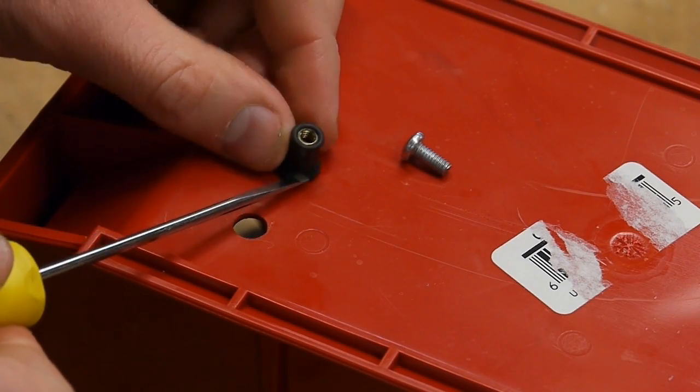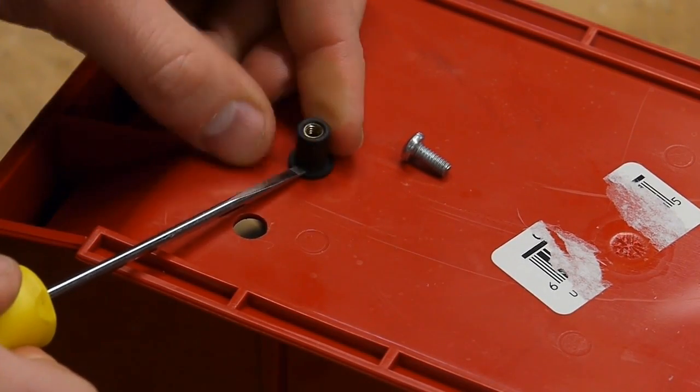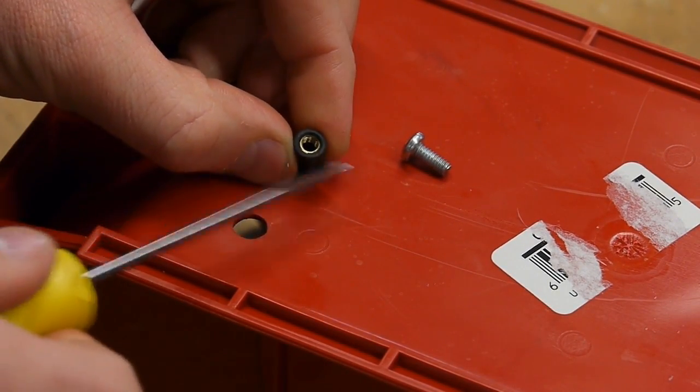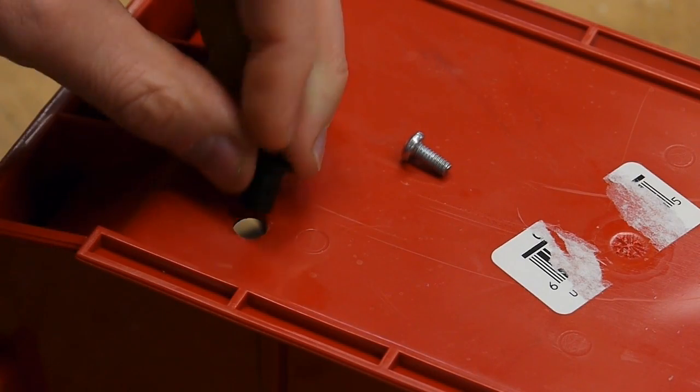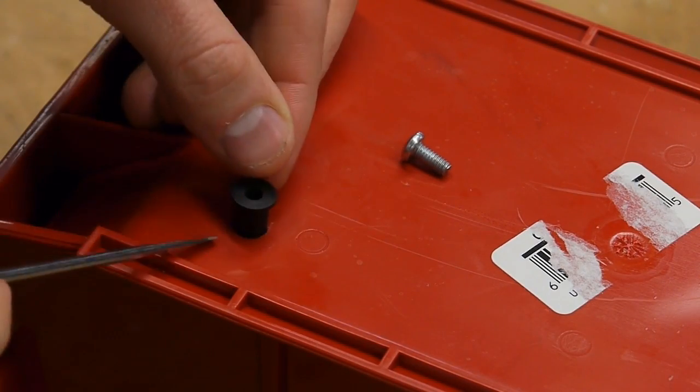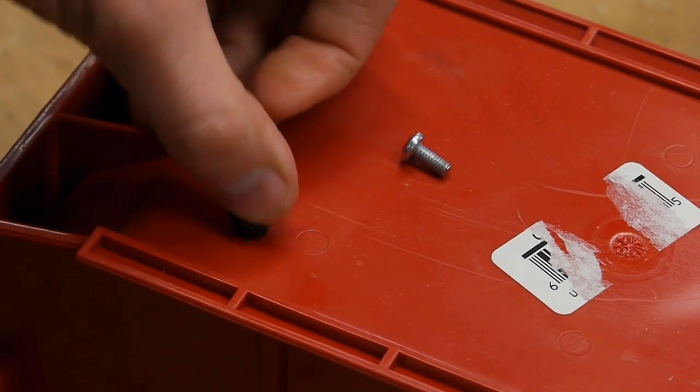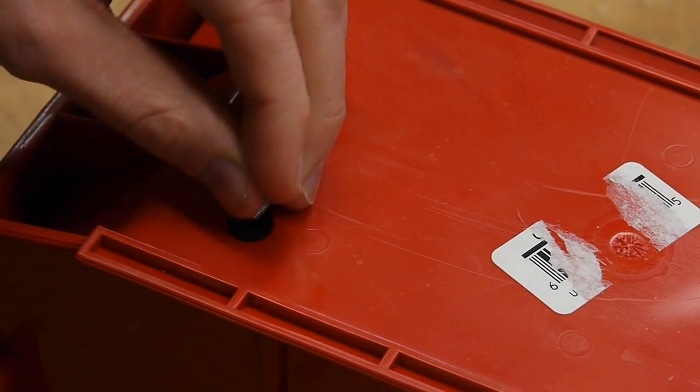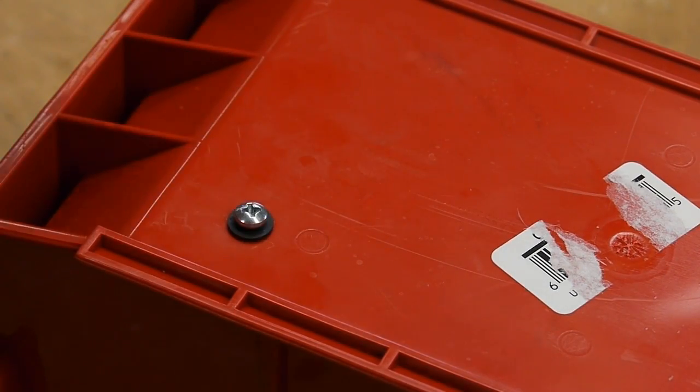This is basically a soft rubber piece with a brass nut sort of embedded into the rubber. The idea is that you get one that's sized for the hole that you need and push it through like that. Then when we tighten down the screw it pulls on the nut that's embedded in the rubber.